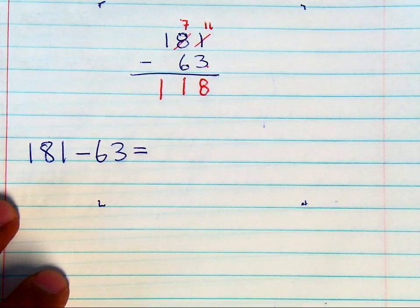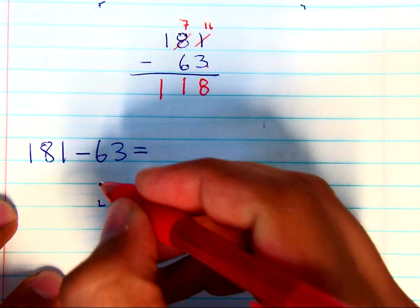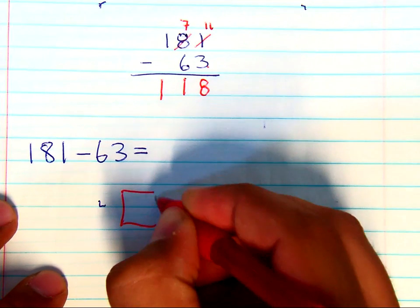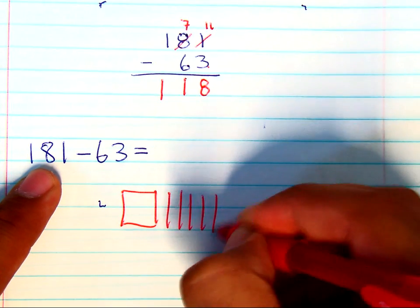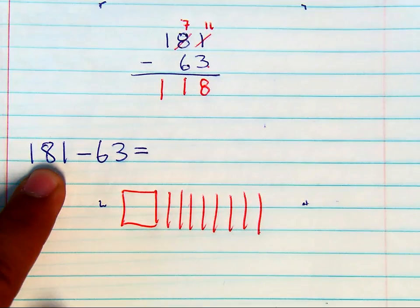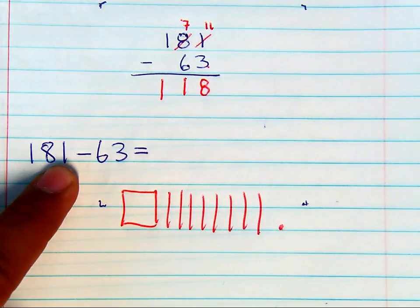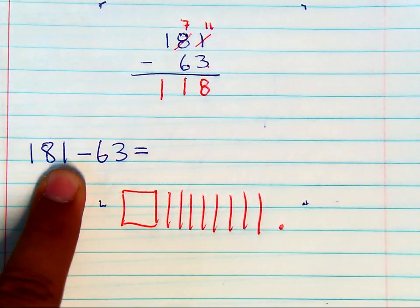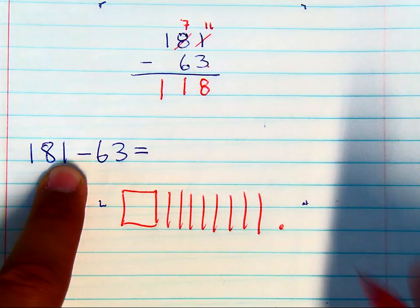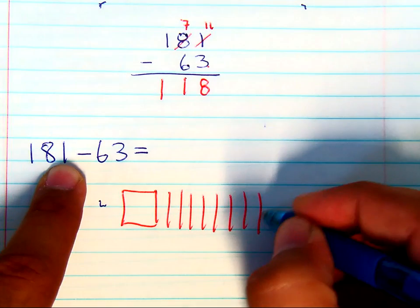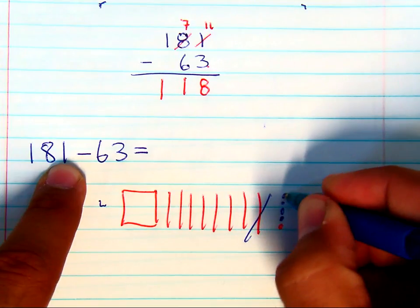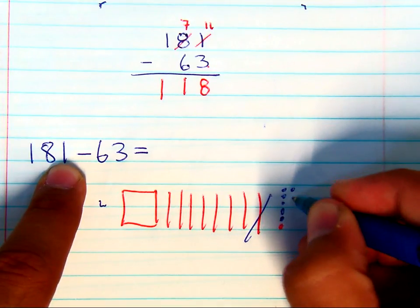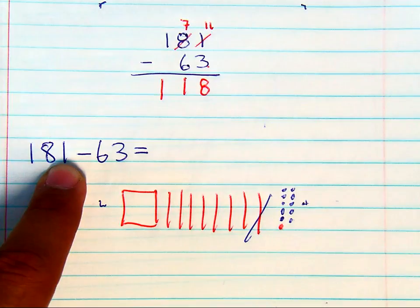So that's tricky because what they are asking you to do is to draw that 100, draw that 80, 1, 2, 3, 4, 5, 6, 7, 8, and draw that 1 and realize that you have to break up this 10 and give it 2, 3, 4, 5, 6, 7, 8, 9, 10 to the ones.